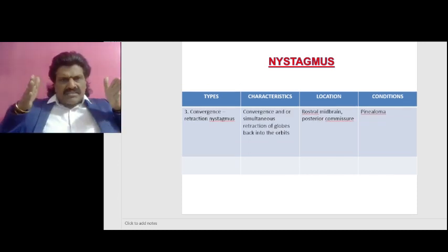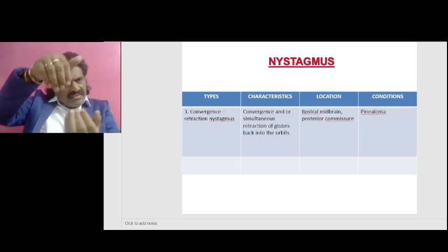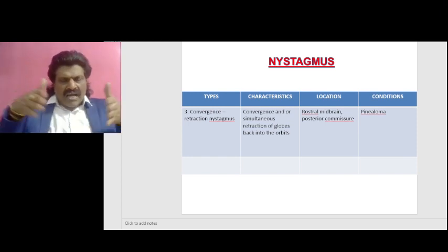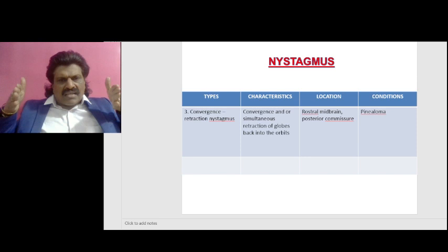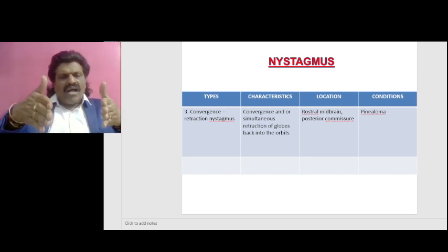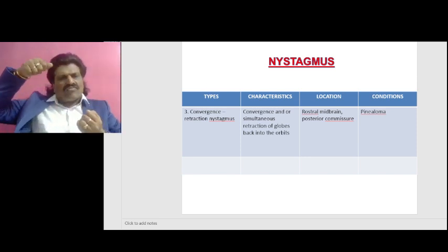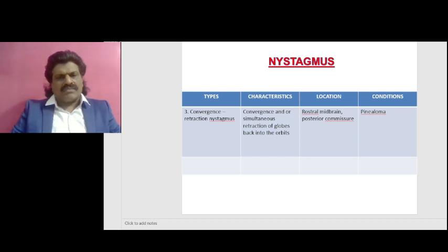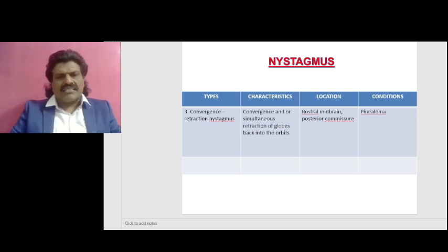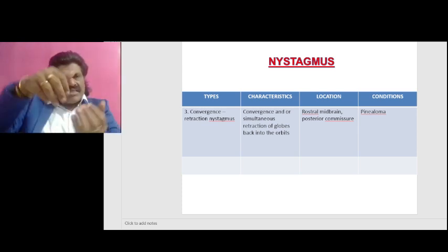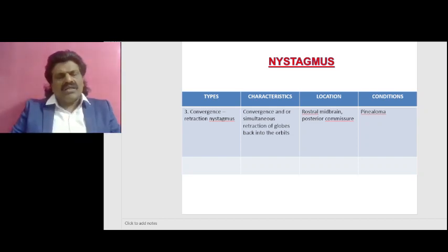Another interesting type is convergence-retraction nystagmus. Its characteristics are convergence and/or simultaneous retraction of the globes back into the orbits. We see this in rostral midbrain or posterior commissure lesions, and in conditions like pinealoma. To understand the mechanism — why there is convergence and why there is retraction — we need to understand one important law.